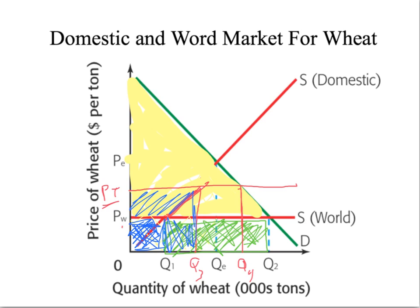Because it's a tariff, what it results in is government revenue. This area here is representative of government revenue because of the tariff collected by the government. And you can now see that foreign revenue is now reduced to the area of this square here.